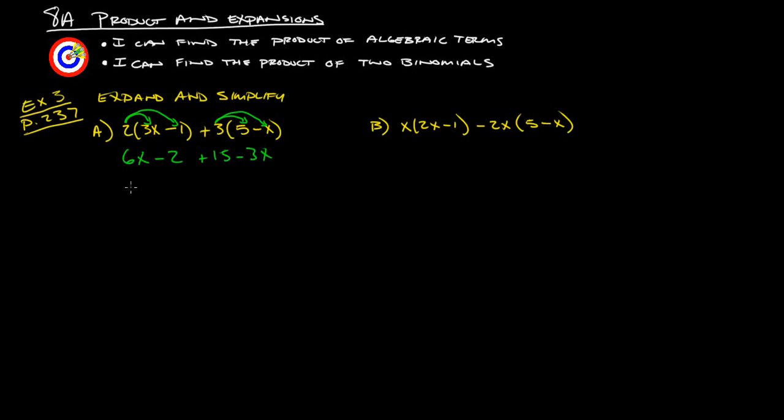Collecting like terms, we get 6x and negative 3x gives us 3x. And then negative 2 plus 15 gives us 13. So we get 3x plus 13. On this one, distribute the x through to both of these terms, and on this one, distribute the negative 2x to both of these terms here.